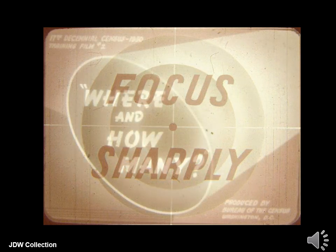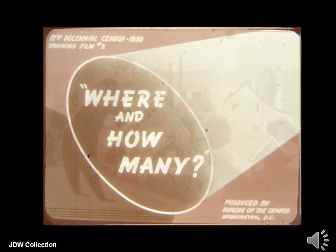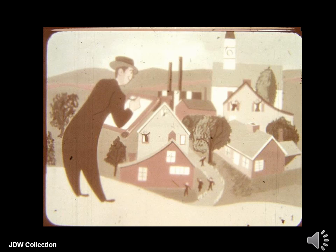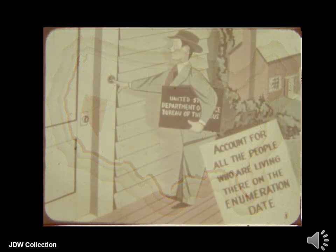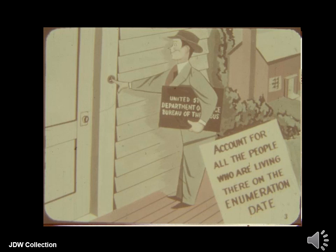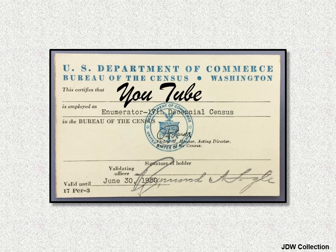A clip from the training film: 'This film deals with how to find all places where people live and how to enumerate the people you find. If each enumerator failed to list only one person who should have been counted in this census, more people would be missed than there are in the entire state of Nevada. Your job is to call at every dwelling place in your enumeration district and account for all the people living there on the enumeration date.'